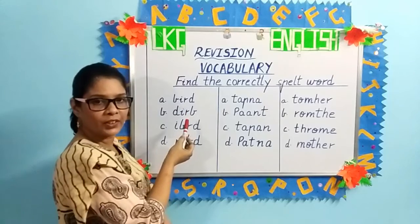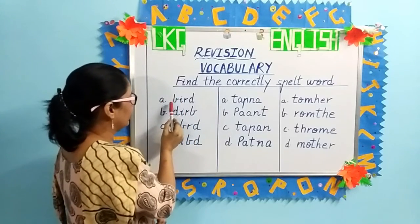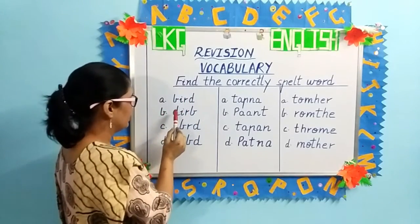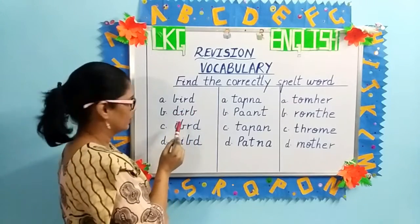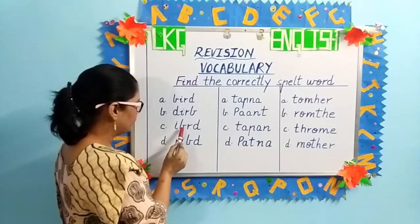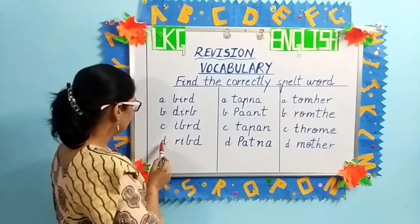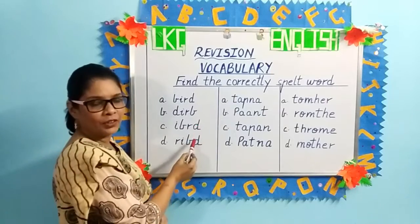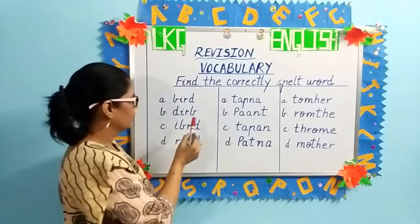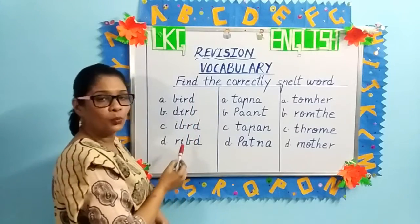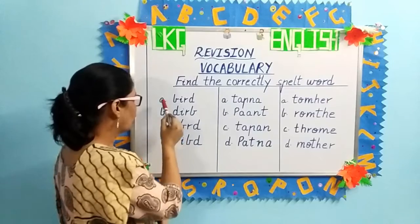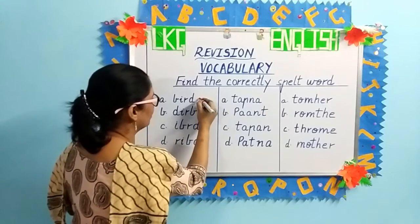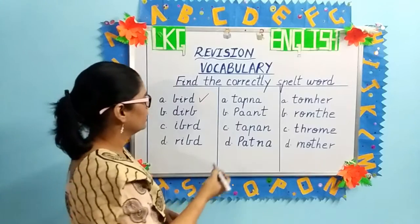Let us begin with the first one. Option A: B-I-R-D. Second option: D-I-R-B. Third option: I-B-R-D. Fourth option: D-R-I-B-D. Look at each word carefully and select the right spelling. Very good — option A, B-I-R-D, bird. You will put a small tick. Understood, children?